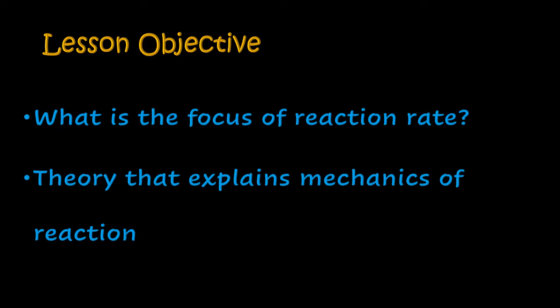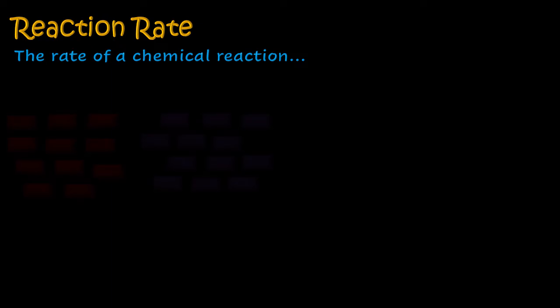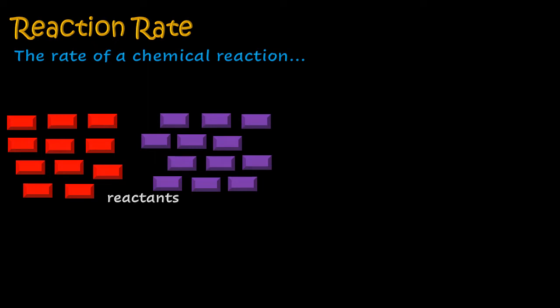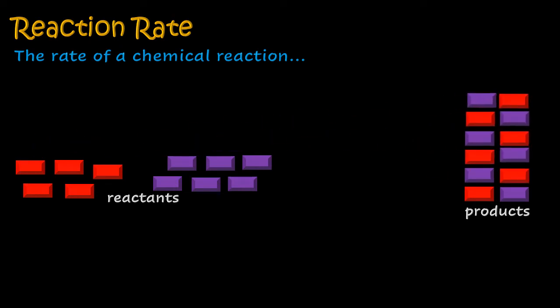Consider these building blocks and call them reactants — red building blocks and purple building blocks coming together to form a pile that will be a wall. The building blocks come together and therefore form the product, as we can see, and that happened quite fast.